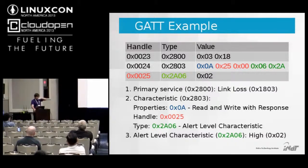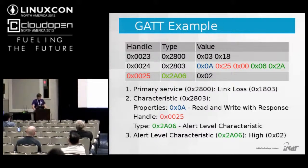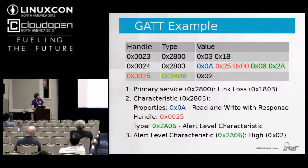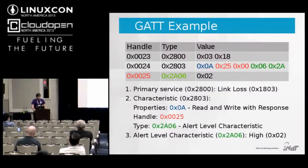The first line has handle 0x0023, type 0x2800 — the UUID for a primary service declaration — declaring a Link Loss service with UUID 0x1803. The second line shows the first characteristic of the Link Loss service.